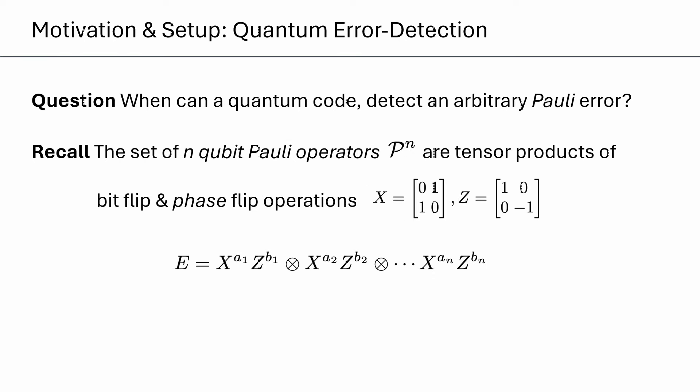I wanted to begin with some broad motivation within the context of quantum error detection, to hopefully give some context to the broader crypto community. The question we study here is when can a quantum code detect an arbitrary Pauli error? To take a step back, quantum mechanics is a fundamentally continuous theory, and yet one of the key insights in quantum error correction was that it sufficed to correct from a discrete set of errors, or a basis.